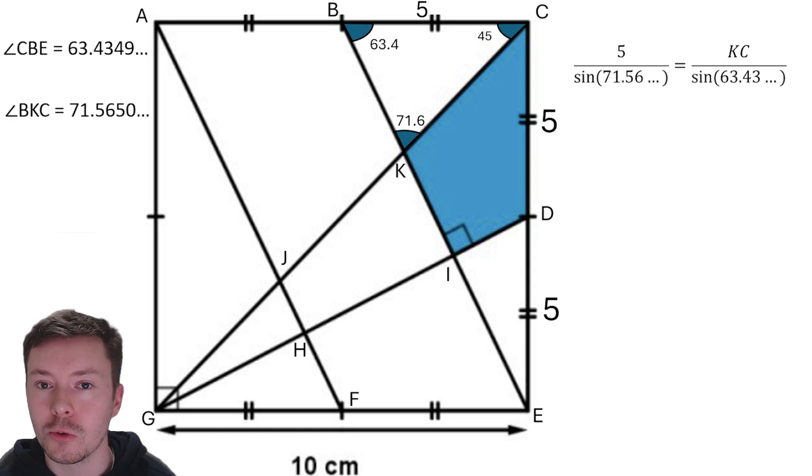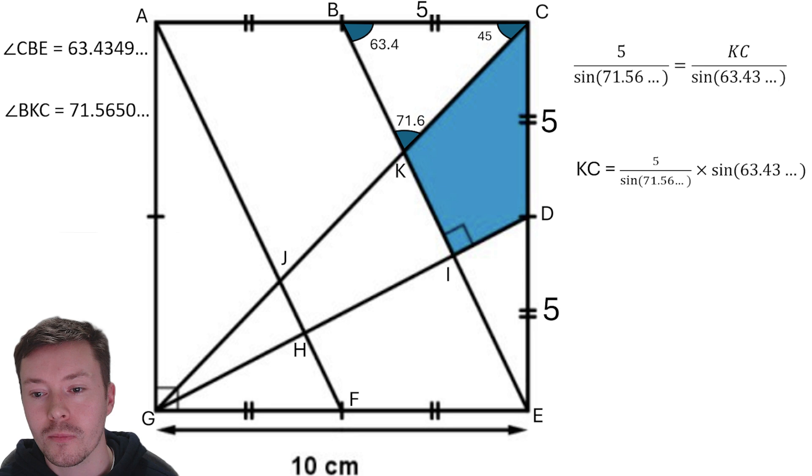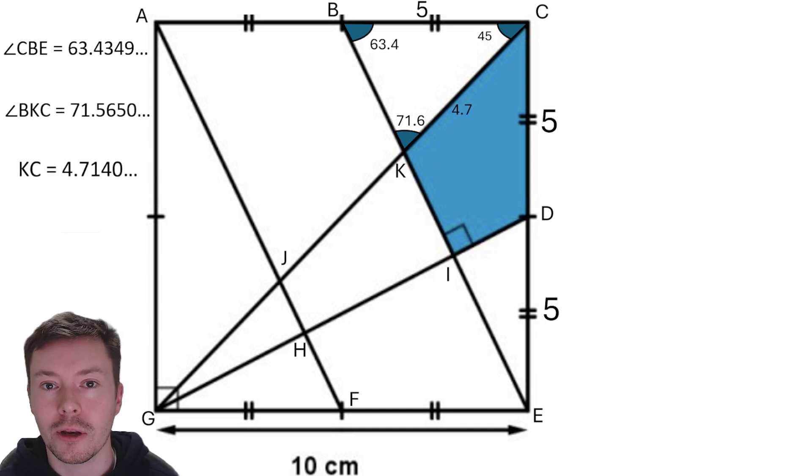Now the next thing I'm going to do is use the sine rule to work out one of the sides. So 5 over the opposite sine of the opposite angle, 71.56, is equal to KC. That's the side length I want to work out over sine of the opposite angle. So 5 over sine 71.56 is equal to KC over sine 63.43. Now manipulating that by multiplying both sides of that equation by sine 63.43 will give me KC. Now that will give me an answer of 4.7140. So I'm going to put that on my diagram and I'm going to tidy all of this up and put the side length over to that left hand side again.